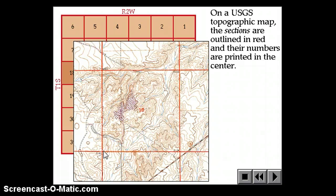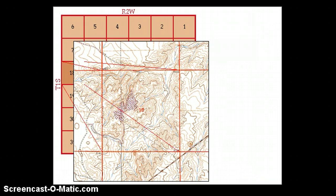On a topographic map, there are red lines which indicate the edges of a section of a township. Often they coincide with roads. On this map they don't happen to, but around here they often do. The number of the section is always printed in the center of those red lines on a USGS topographic map.